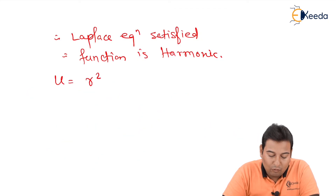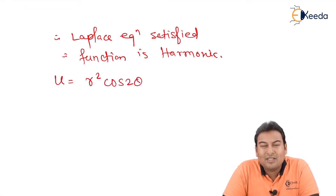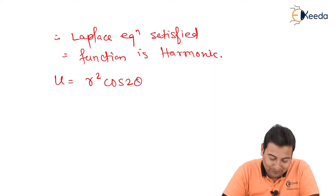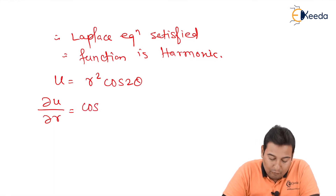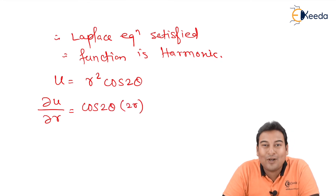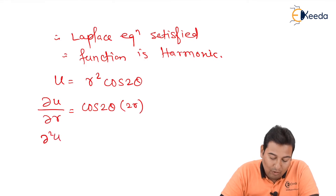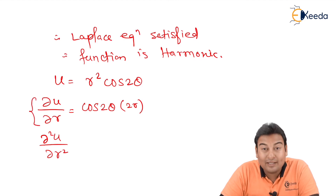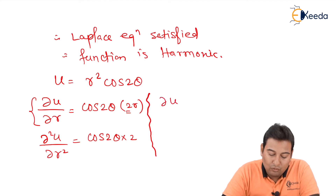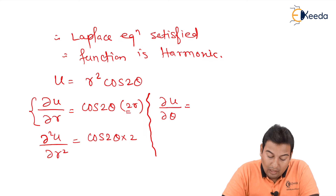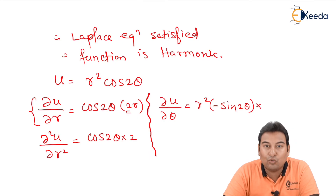The second example: u = r² cos 2θ. It is clearly in terms of r and theta, so we check the polar Laplace equation. ∂u/∂r — theta is constant, cos 2θ is constant, and r² derivative is 2r, so ∂u/∂r = 2r cos 2θ. Differentiating again with respect to r: ∂²u/∂r² = 2 cos 2θ. For ∂u/∂θ — r² is constant, and the derivative of cos 2θ is −sin 2θ × 2, so ∂u/∂θ = −2r² sin 2θ. Then ∂²u/∂θ² = −4r² cos 2θ.